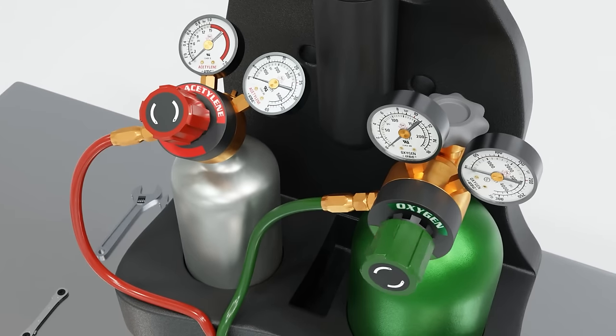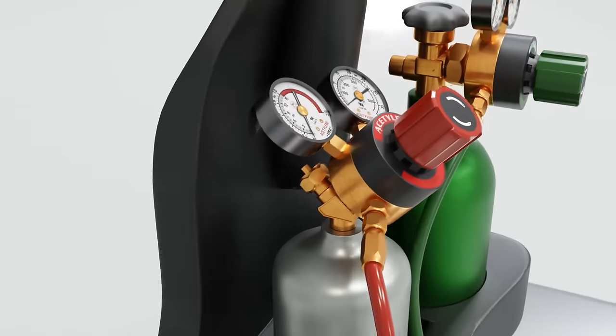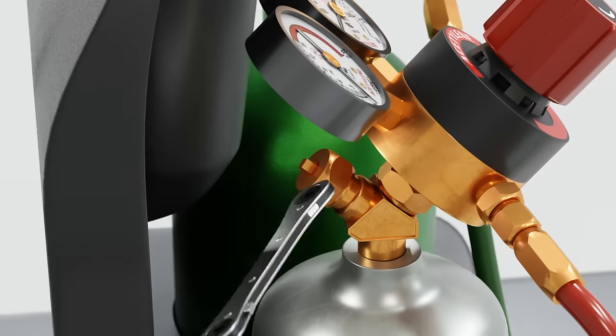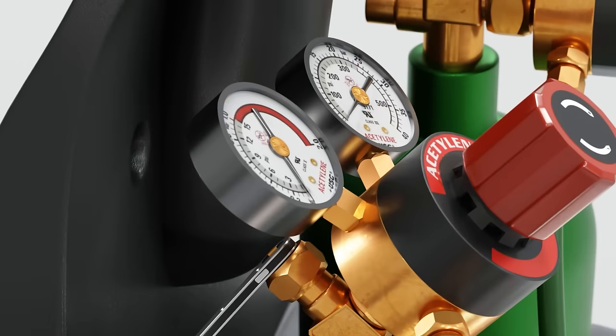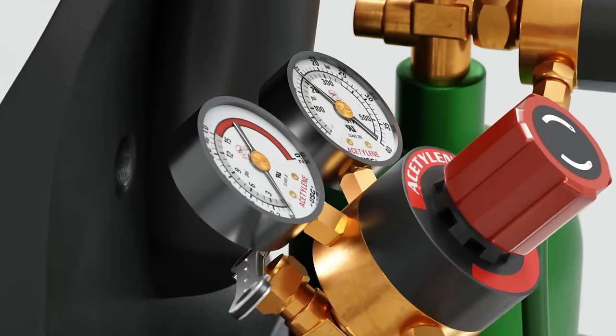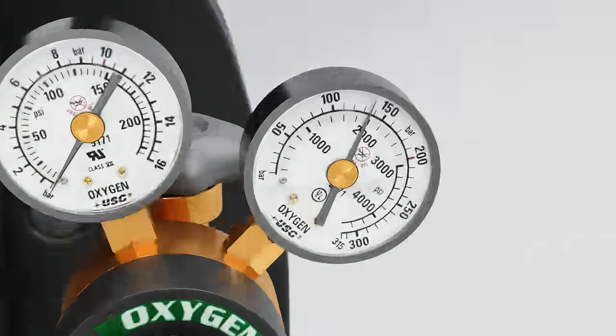Next, turn your regulator adjustments counterclockwise, closing them off completely. Then open your tanks. Use a refrigeration wrench for your acetylene tank. Do not use a crescent wrench or channel locks. Now open your oxygen tank.